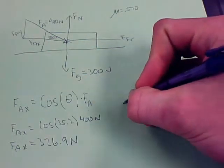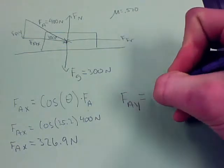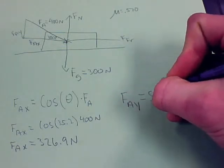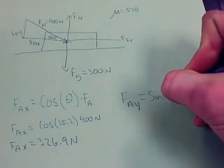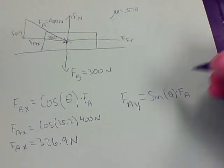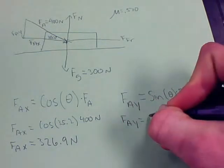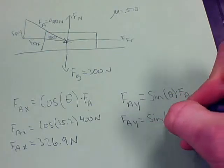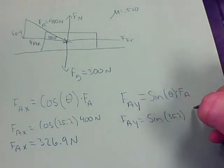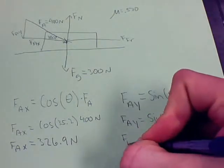Now we're going to find Fay equals sine of theta times FA. And the numbers you plug in, Fay equals sine of 35.2 times 400 newtons. And it's not Fg, it's FA.